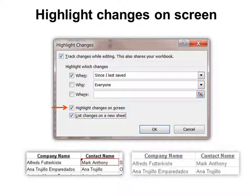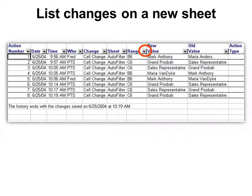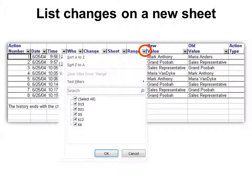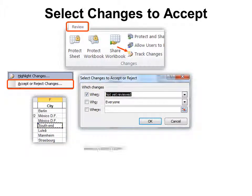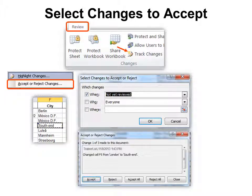You can also choose to highlight the changes on screen — if it's checked you'll see them, if not you won't. If you choose 'List changes on a new sheet,' it creates a sheet with a filter so you can view changes based on ranges or who made them. Under the Review tab, Track Changes, you can also choose to Accept or Reject changes based on when, who, or where — just like before.